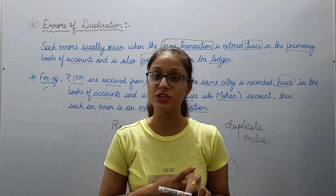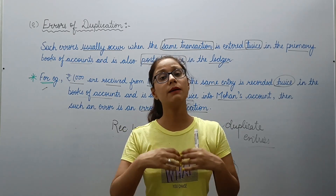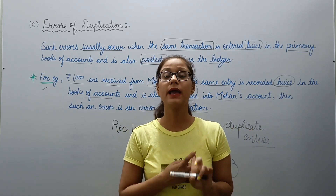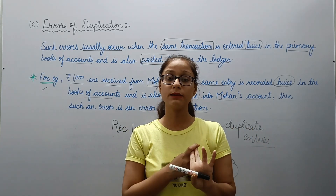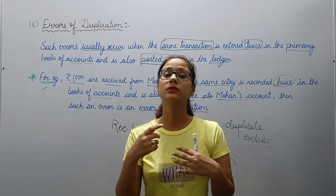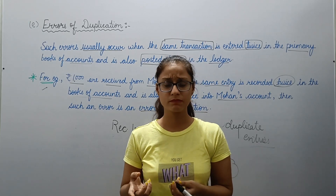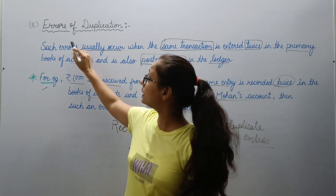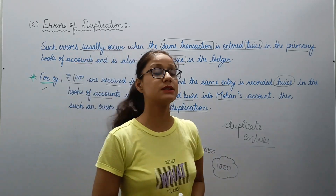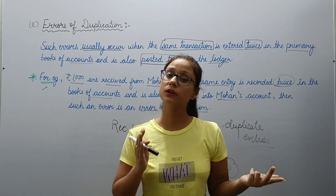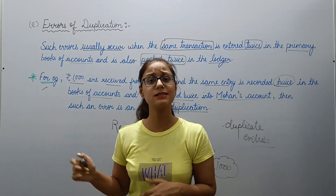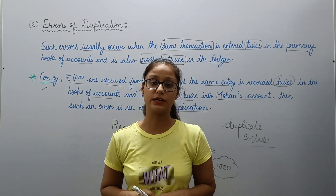Under detection of errors, we discussed 5 types of errors: first was error of omission — where you completely forgot to record the transaction; second was error of commission; third was compensatory errors; fourth was error of principle; and fifth was error of duplication. In the next lecture we will discuss detection of frauds and prevention of frauds and errors, and after that the third part — other objectives — will be discussed.